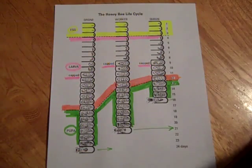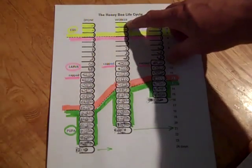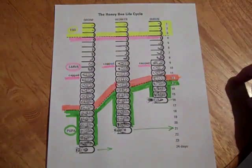Okay, here's the life cycle of the honey bee. First the eggs are laid and for the first three days there are eggs.